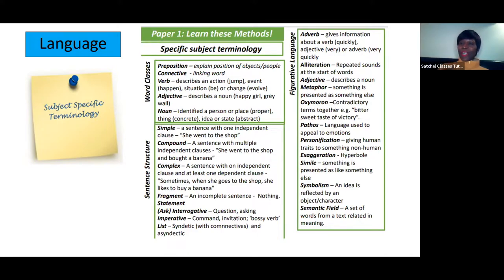Language and subject terminology is also about figurative language: metaphors, oxymoron, personification, similes, symbolism, pathetic fallacy, connecting with emotions and pathos, and the types of vocabulary being used—the semantic field. These are small parts of sentences, larger parts of sentences, and imagery and descriptive language. That is specific subject terminology for language.